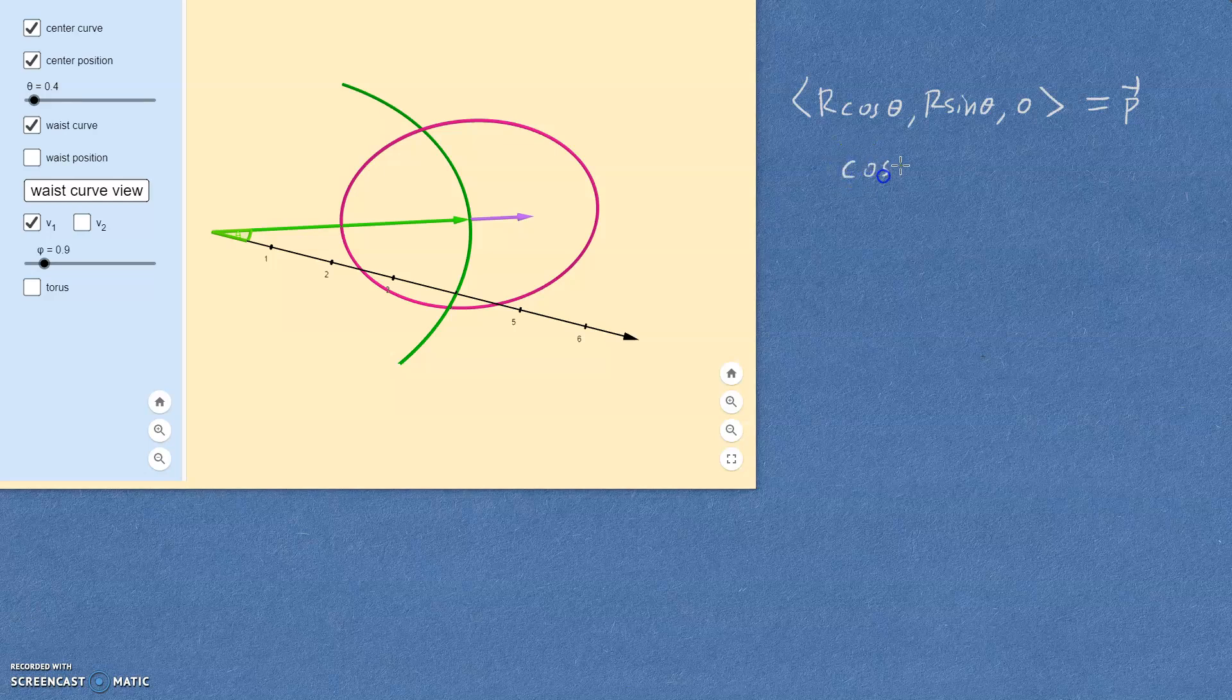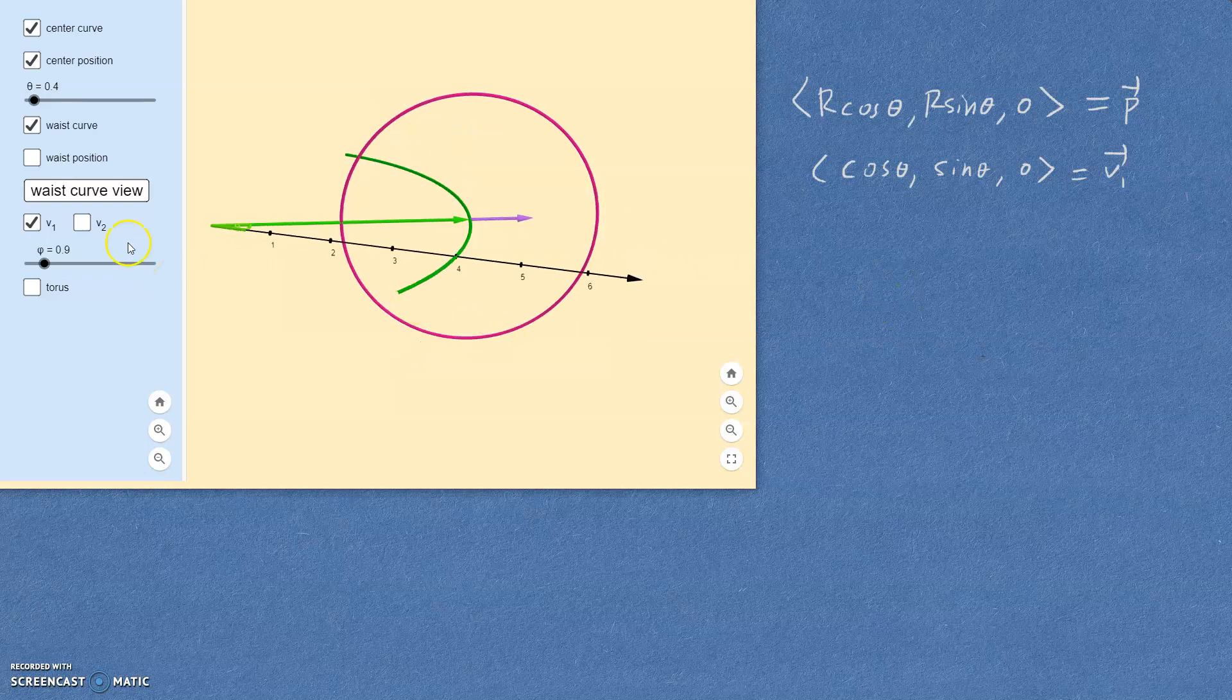So that should look something like this: cosine theta, sine theta, still zero on that. That is the vector that we're going to call v1. We also need a second vector at a right angle to that. The thing that'll work perfectly is the vector that points straight up. That is the vector zero, zero, one. You might also know that as the vector we call k sometimes when we're in three dimensions.